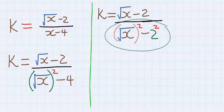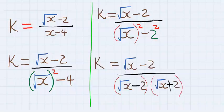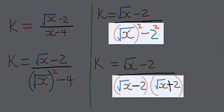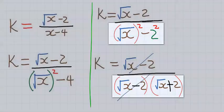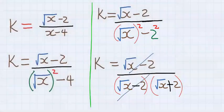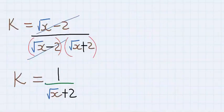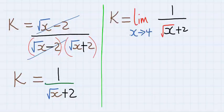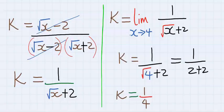You can see that difference of two squares can be applied at the denominator. Hence k has now been represented in difference of two squares. Next, square root of x minus 2 can cancel out, and we are left with 1 over (square root of x plus 2). Taking the limit and substituting x = 4, k is now equal to 1 over 4. This is our answer.